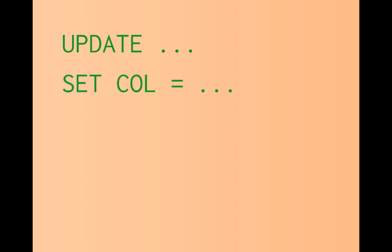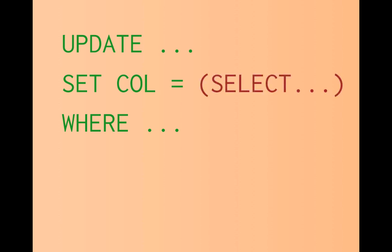The ANSI SQL standard allows for just three clauses in the UPDATE statement: UPDATE, SET, and WHERE. If you need to update one table with values from another, you can use a subquery in the SET clause. Generally, when your update is based on primary keys there's not much danger, but often external data is used to update columns.